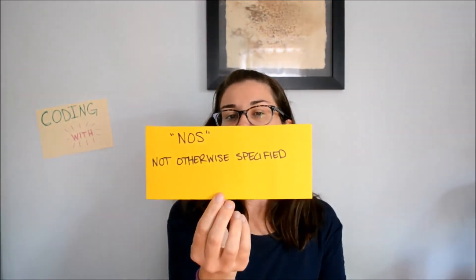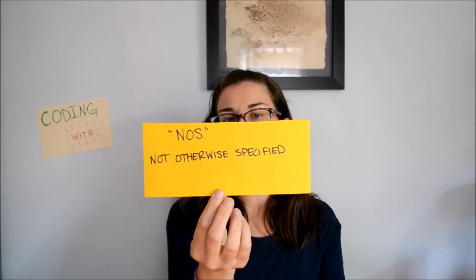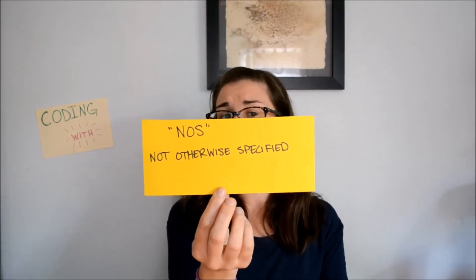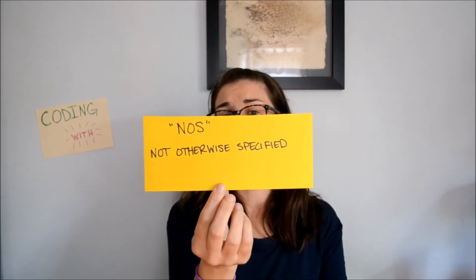And then we have NOS, not otherwise specified. When healthcare provider does not offer any detailed information to allow for a more specific code selection. So sometimes you will find that the healthcare provider doesn't tell you what the infectious agent is. And you could if you wanted to query the provider. But what sometimes happens is they just don't know what that infectious agent was. They were unable to find it in the lab work or it wasn't present in the lab work. But they know that that caused whatever illness or infection. So at that point you just have to go with the NOS diagnosis code.